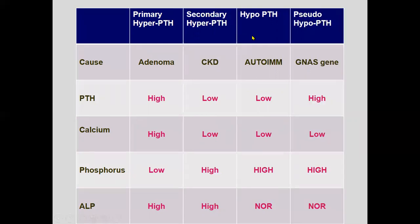In pseudo-hypoparathyroidism, the problem is the mutation in the GNAS gene. PTH will be higher compared to hypoparathyroidism because of resistance to PTH action — it is secreted irrespective of calcium level. Calcium will be low, phosphorus will be high, and alkaline phosphatase will be normal.